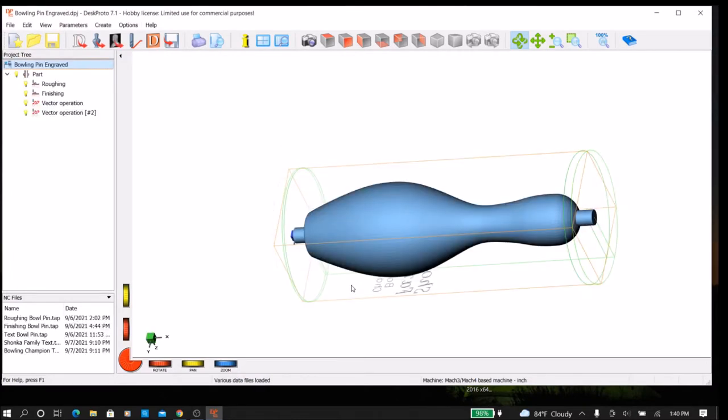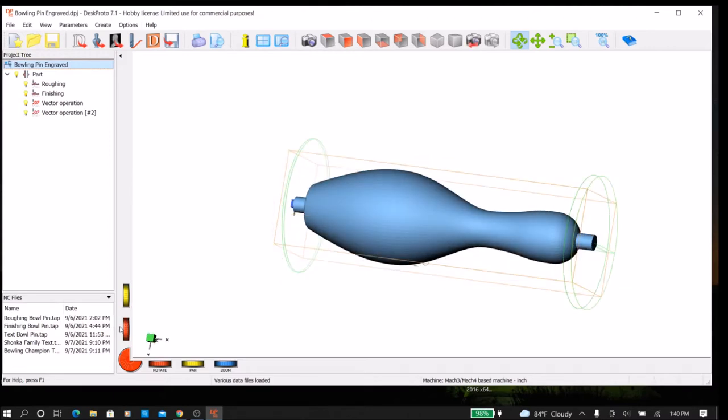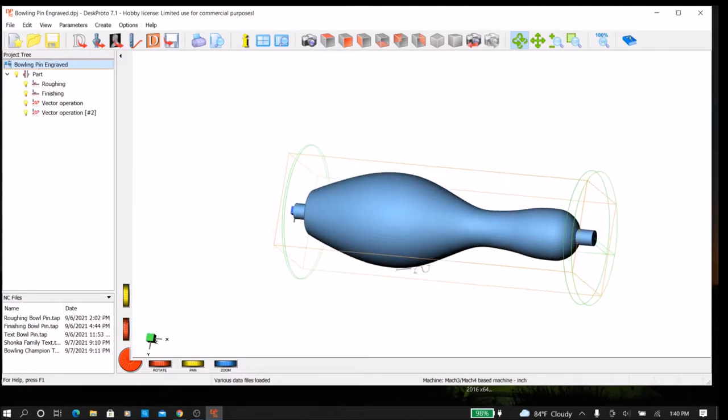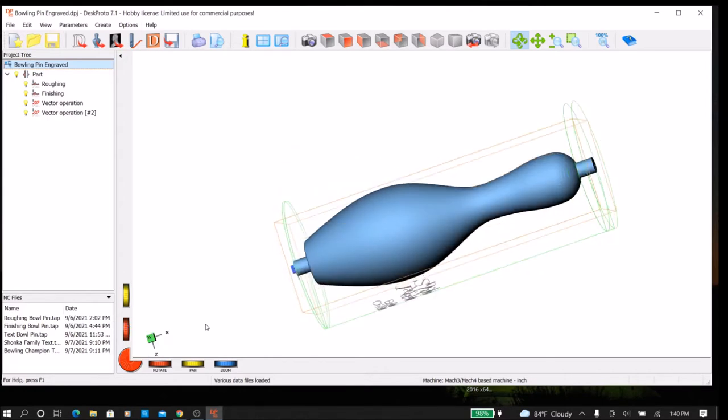Fusion 360 couldn't be used for this purpose because hobbyist licensees cannot use rotary access capabilities of Fusion 360.